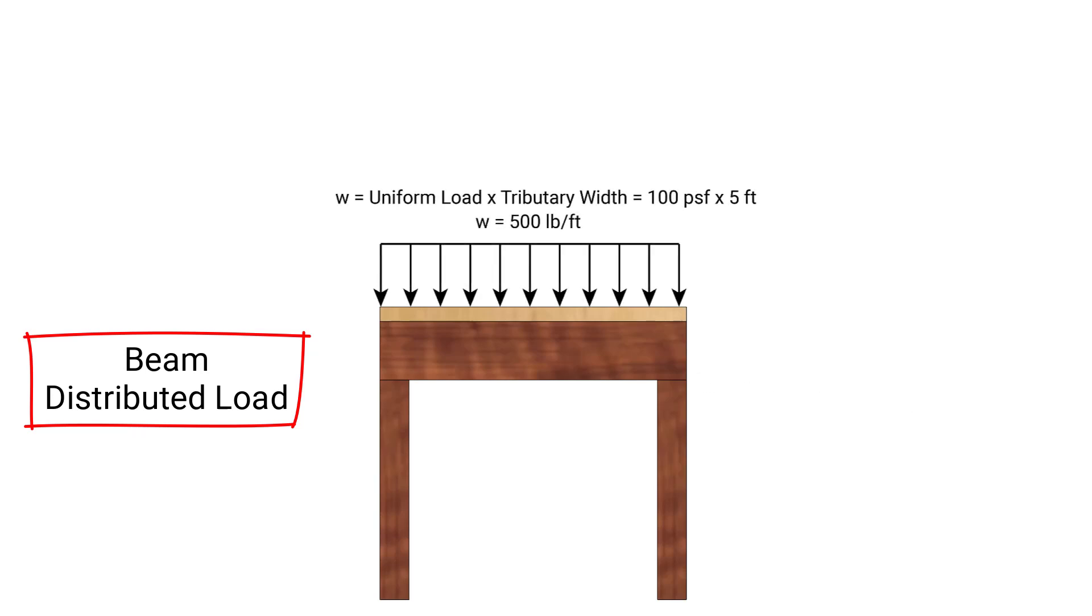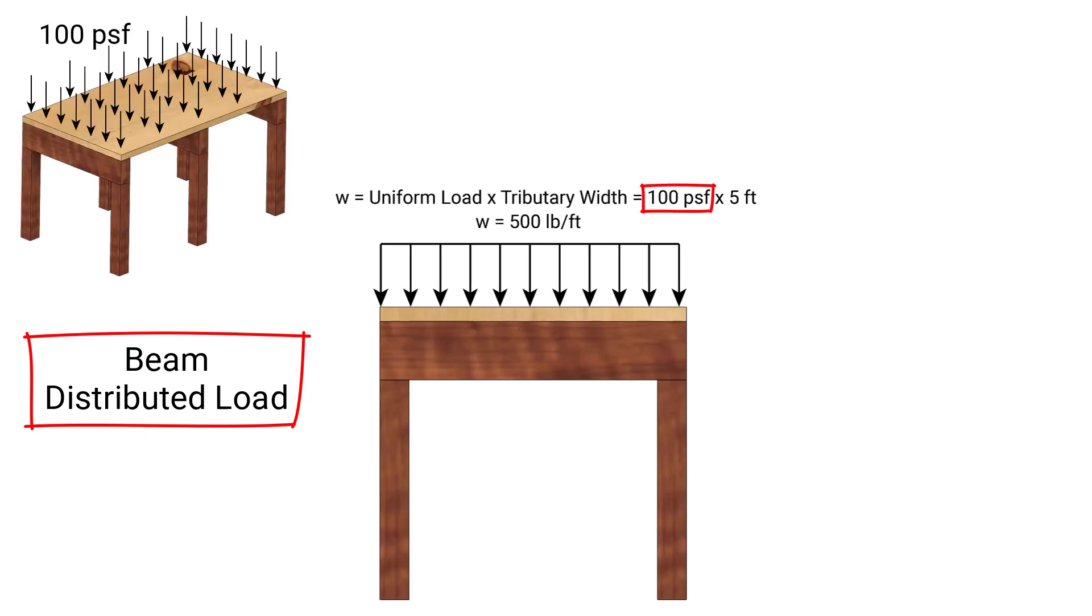To find that distributed load, which will always be a uniform distributed load, we will take the original uniform service load, that's given to be 100 PSF, and we multiply that by the tributary width. And in this case, for the outside beam, it will be 5 feet.